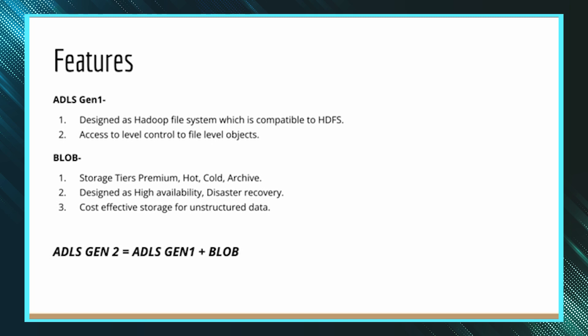Blob comes with different storage tiers: Premium, Hot, Cold, and Archive. Premium is for frequently accessed data requiring low latency. Hot is for data where a little latency is acceptable. Cold is for data accessed only about once a month. Archive is for backup storage. The cost varies depending on which tier you select — Premium is the most expensive and Archive is the cheapest.